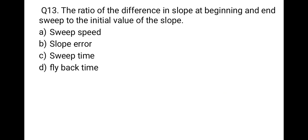The next question: the ratio of the difference in slope at the beginning and end of a sweep to the initial value of the slope — this ratio defines the slope error. The correct option is B: slope error.